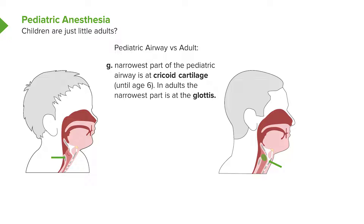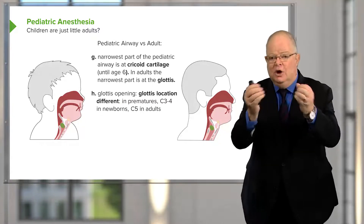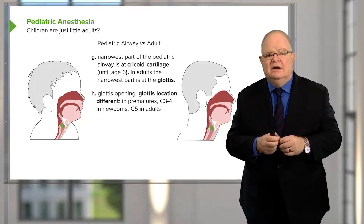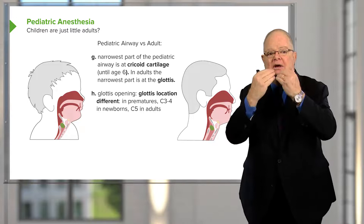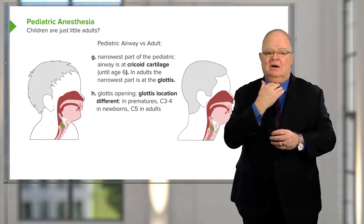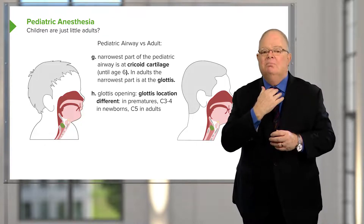The cricoid cartilage position changes at different stages of life. The cricoid remains the narrowest point until age four to five, after which the glottis increasingly becomes the critical stricture point in adults. The glottic opening changes position over childhood — it's quite high in the throat in premature babies and newborns, at an intermediate position in toddlers, and much lower in adults.